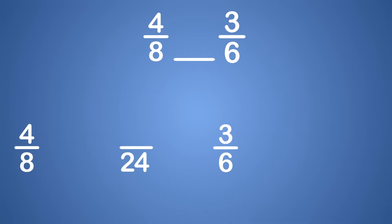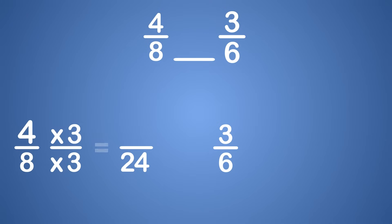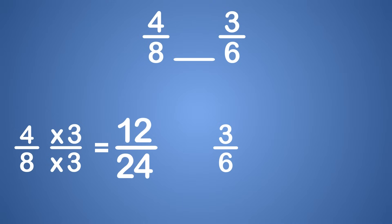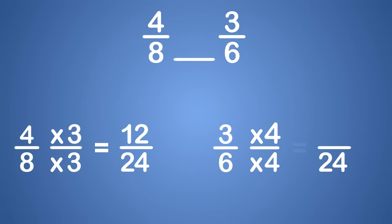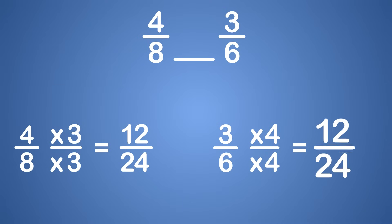Now let's write 4 eighths as a fraction with 24 in the denominator. What number times 8 is 24? That's right, 3. So we will multiply both the numerator and denominator by 3 to get an equivalent fraction. 4 times 3 is 12, and 8 times 3 is 24. We found 4 eighths is equivalent to 12 twenty-fourths. Now let's write 3 sixths as an equivalent fraction with a denominator of 24. What number times 6 is 24? That's right, 4. So we will multiply both the numerator and denominator by 4 to get an equivalent fraction. 3 times 4 is 12, and 6 times 4 is 24. We found that 3 sixths is equivalent to 12 twenty-fourths.